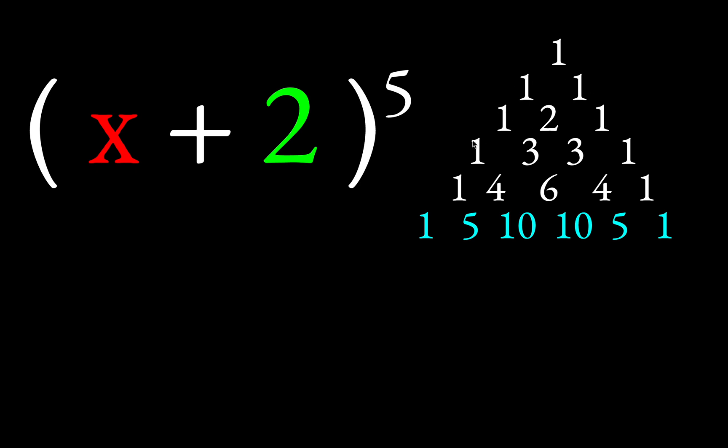Then we have first order, second order, third order, fourth order, and here we are at fifth order with the blue numbers. What you do is you take these blue numbers and use them as coefficients in our expansion of this binomial, x plus 2 to the fifth.